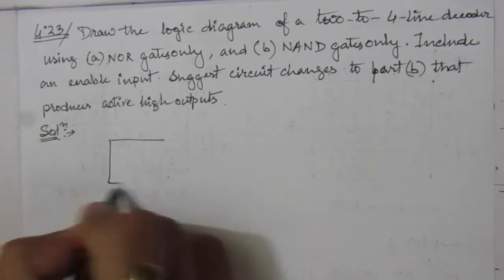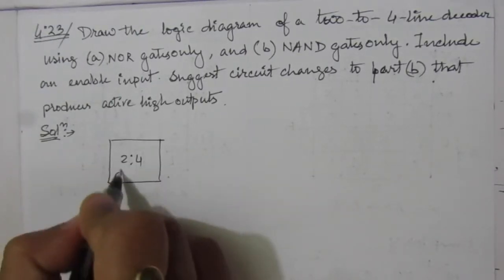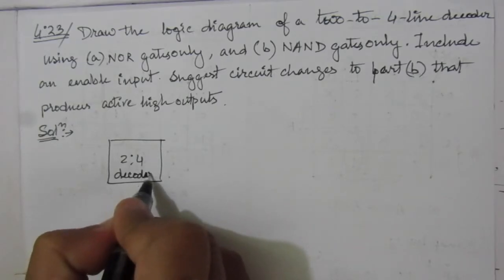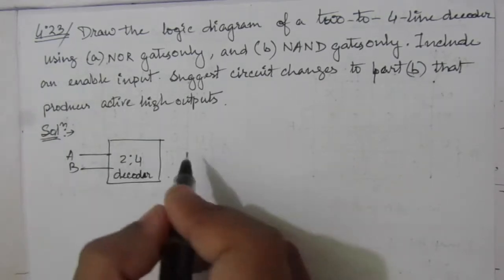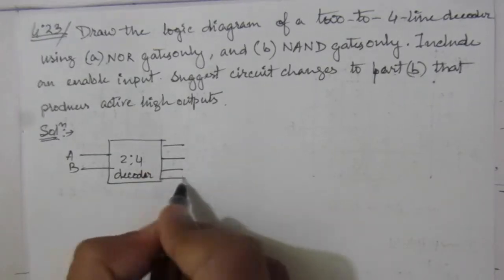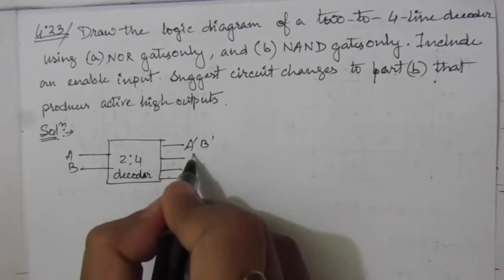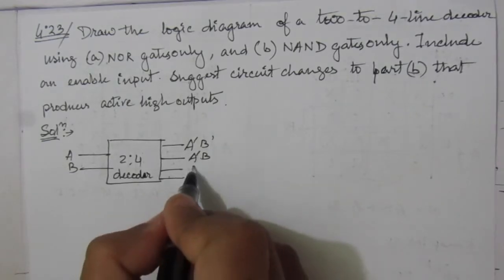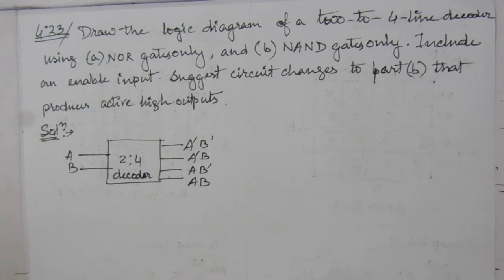Now let us solve this problem. In the normal 2-to-4 decoder, we have two inputs A and B, and four outputs: A̅B̅, A̅B, AB̅, and AB.